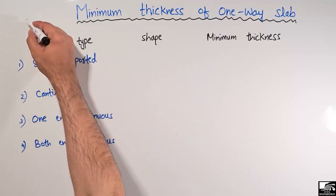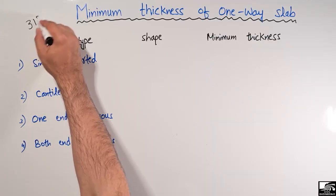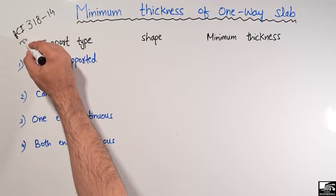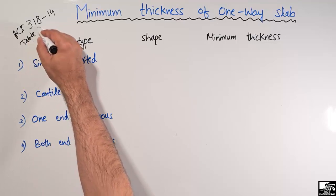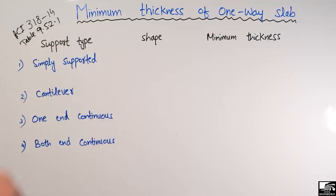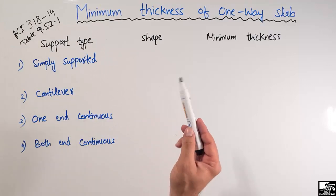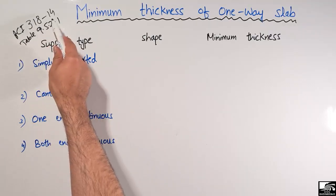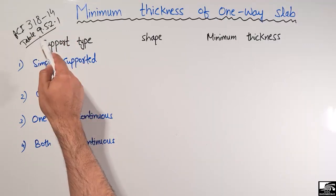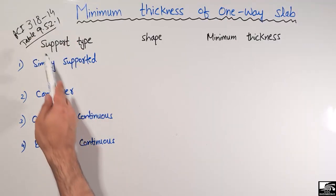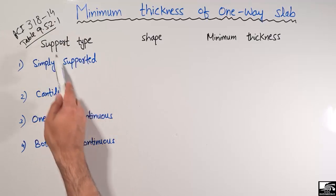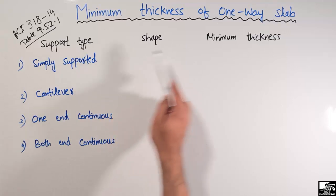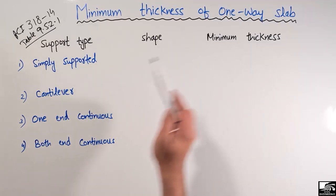According to ACI 318-14, Table 9.5.2.1, we can find out the minimum thickness for a one-way slab. In the first column we have the different support types, and in the second column we have the shape of the slab and the minimum thickness for each type.